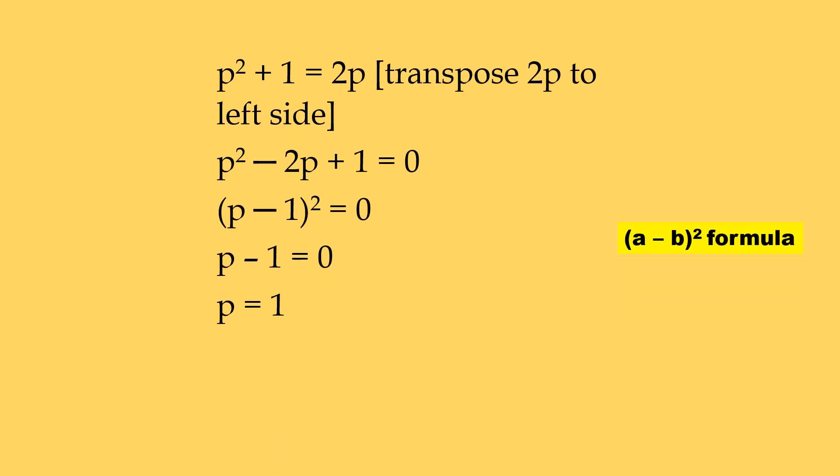We have got a quadratic equation, p square plus 1 equals 2p. Transpose 2p to left side. This gives p square minus 2p plus 1 equals 0. This may be solved by factorization or quadratic equation formula, but we can readily recognize it as the formula for p minus 1 whole square. Then p minus 1 equal to 0, or p equal to 1.